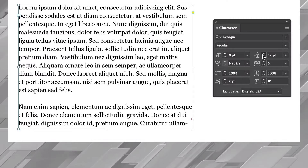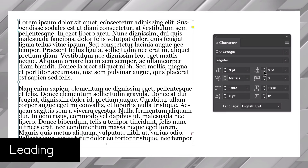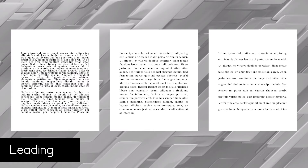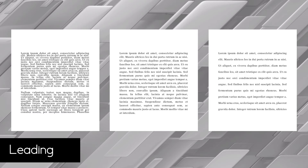Let's also discuss leading, or line spacing. Just like we were talking about with margins, space is very important. Here are three examples. On the left, the text is really cramped and not very comfortable to read. On the right, there's so much space that the lines start to look independent rather than fluid. In the middle, we have a happy medium — finding a balance that reads comfortably.